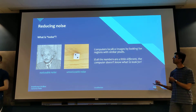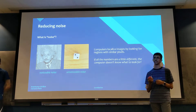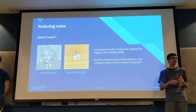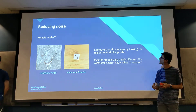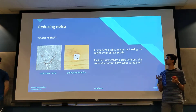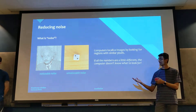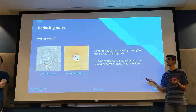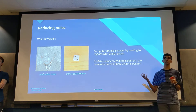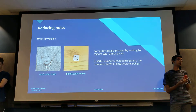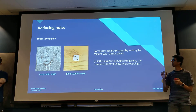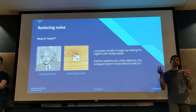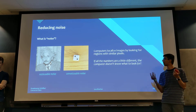The more complicated problem is reducing noise. Noise is basically graphic artifacts in an image — like deep-fried memes with a bunch of artifacts and wonky colors. More precisely, noise is any random variation in the colors in an image. Computers detect features by looking for regions with similar pixels. If all the pixel values are slightly different, the computer doesn't know what to look for. It can't reliably tell you that color value 254 is the same as color value 235, even though to us they look almost identical.